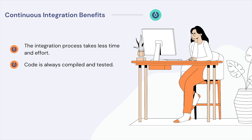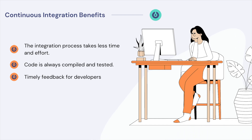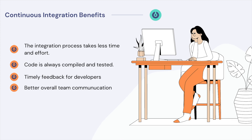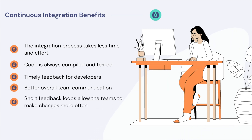Increased visibility allows everyone to see what has been checked in and the results of the latest builds, making it possible for developers to get timely feedback confirming if everything fits together or not. Continuous integration also results in better overall team communication, and by having improved communication, the chances that everything fits together well become higher, resulting in better software. Finally, because of the short feedback loops, teams can make changes more often, allowing them to react to customers' needs better. More importantly, the code can now be delivered to operations more often, resulting in more releases.